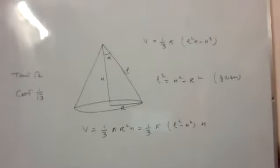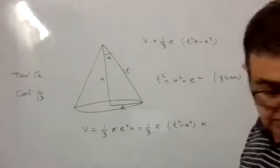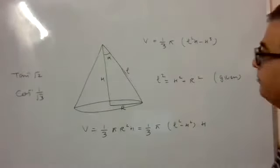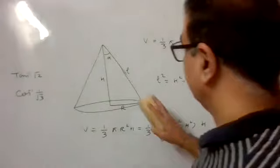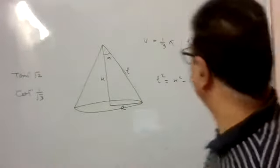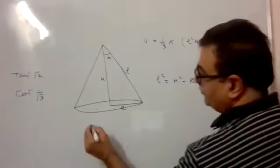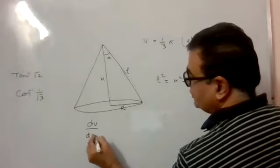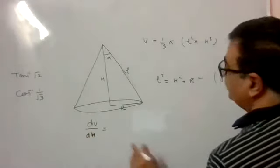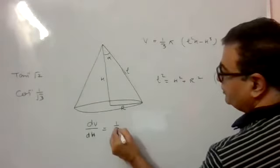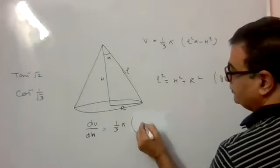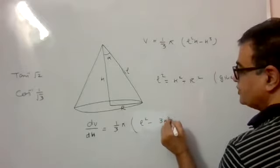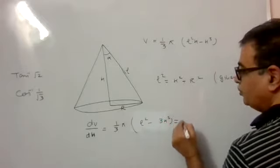Now we differentiate and find the maximum or minimum case. When you differentiate, dV by dH equals 1 by 3 pi times (L squared minus 3H squared), set equal to zero.